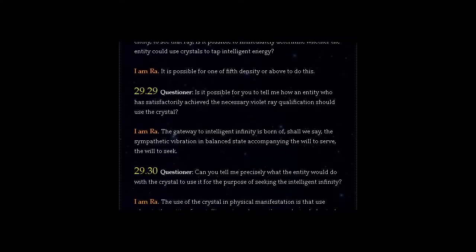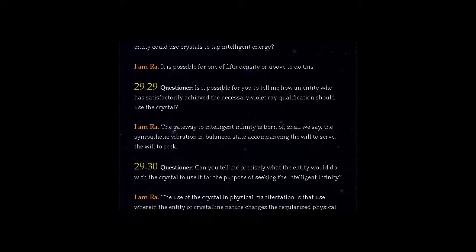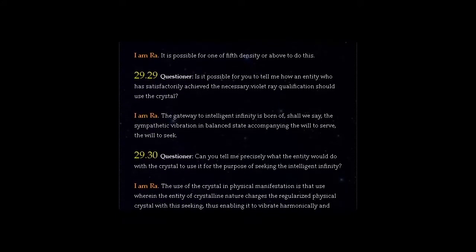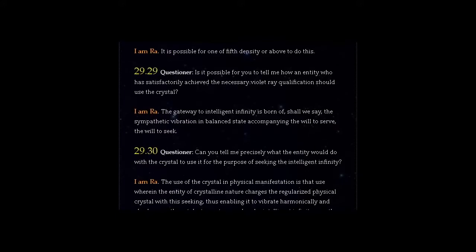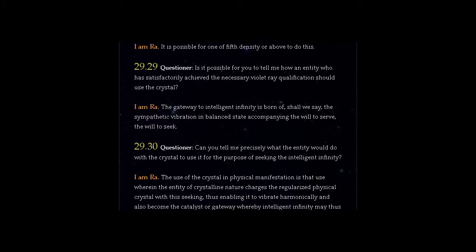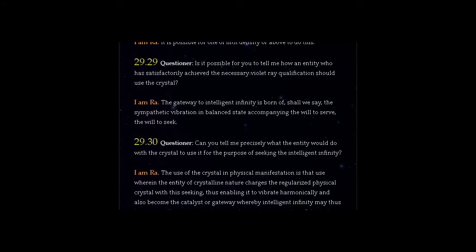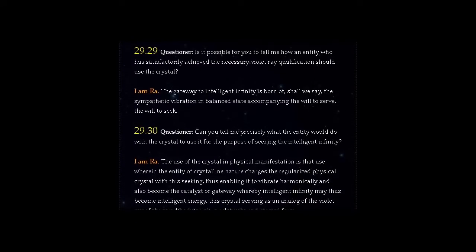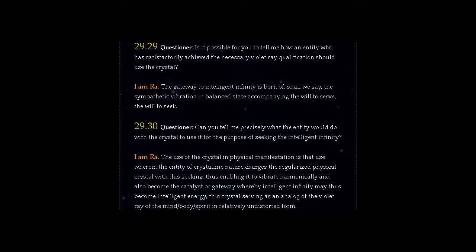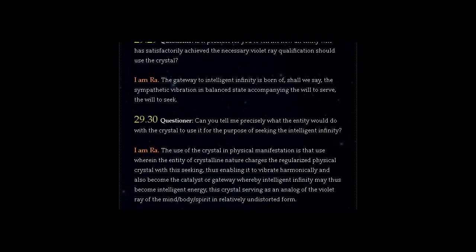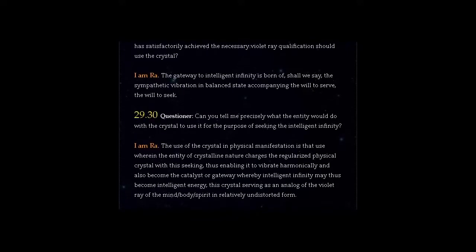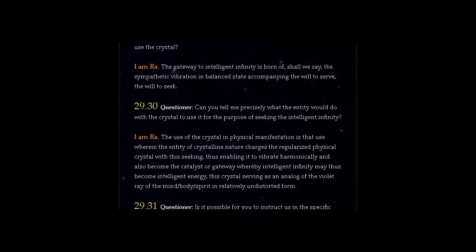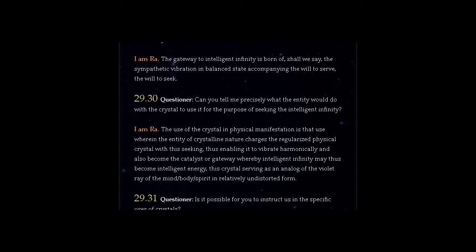Question 29.30. Questioner, can you tell me precisely what the entity would do with the crystal to use it for the purpose of seeking the intelligent infinity? Answer, I am Ra. The use of the crystal in physical manifestation as that use wherein the entity of crystalline nature charges the regularized physical crystal with this seeking, thus enabling it to vibrate harmonically, and also become the catalyst or gateway whereby intelligent infinity may thus become intelligent energy, this crystal serving as an analog of the violet ray of the mind, body, spirit in relatively undistorted form.